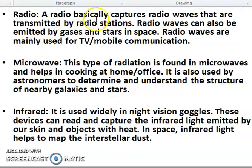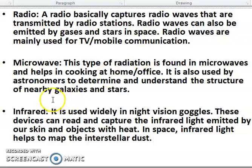What are radio waves? Radio waves are basically captured radio waves transmitted by radio stations. Radio waves can also be emitted by gas and sparks in space. Radio waves are mainly used in TV and mobile communication. Microwaves are a type of radiation that helps in cooking at home and office. They are also used by astronomers to determine and understand the structure of nearby galaxies and stars.